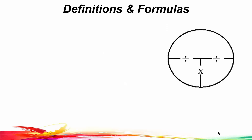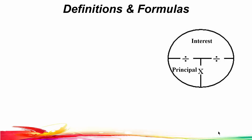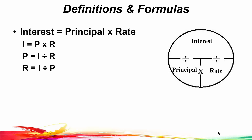Let's take a look at some definitions and formulas. With our memory circle, the small dollars on this type of problem will be interest and the large dollars will be the principal or loan amount, and the rate would be the interest rate. So knowing this, we can say that interest is equal to the principal times the rate: I is equal to P times R.